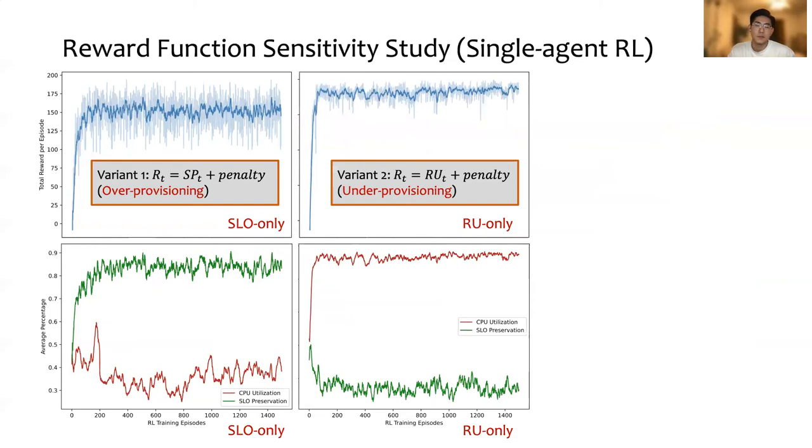The second variant is only to keep the resource utilization part in the reward function. After the algorithm converges, the agent learns an under-provisioning strategy. As you can see in the bottom figure, the utilization is quite high, while the function suffers from SLO violations.